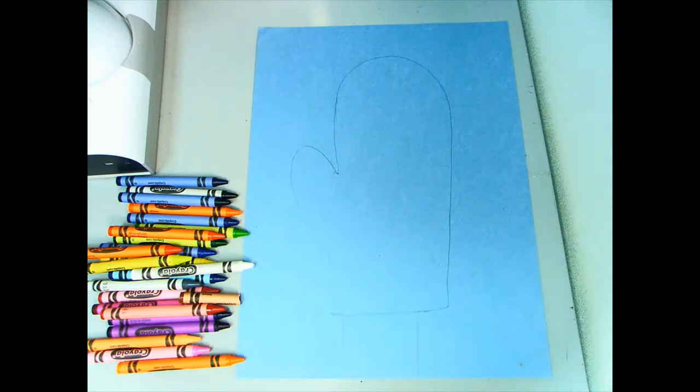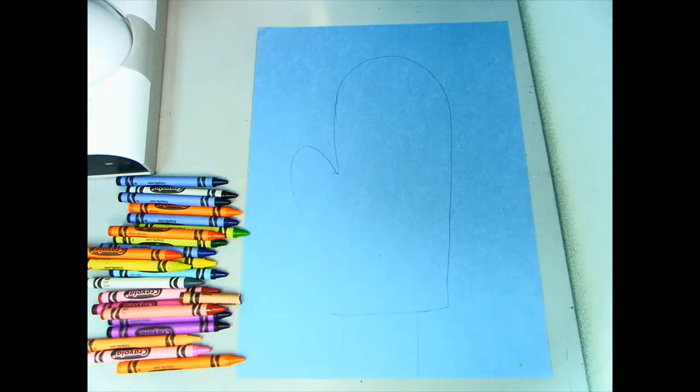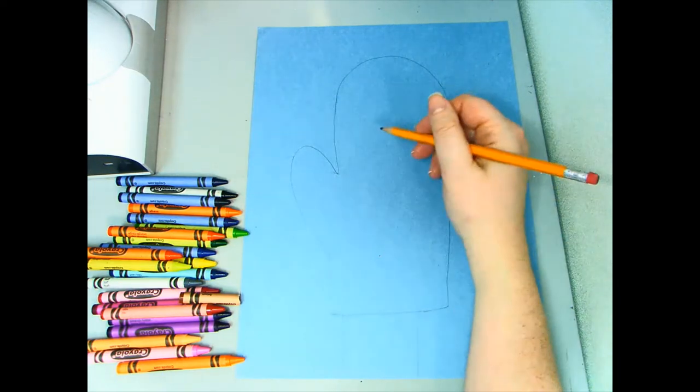For your arm you can choose whatever color you like, except for white. Before you start adding your pattern, you're going to draw a little box just in the middle of your mitten.